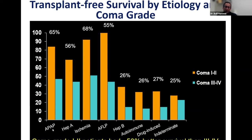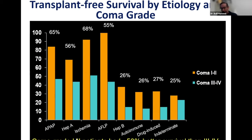If you have acetaminophen and early coma grade (one to two), these patients do well. However, if the patient comes late and already has severe hepatic encephalopathy (coma grade three to four), then only about 50% will survive without a liver transplant, even with a favorable etiology. Coma grade is very important — patients with early coma grade one to two have 50% better survival than those with grade three to four.